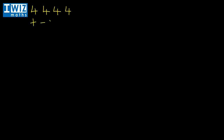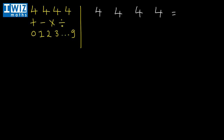Let's recall the puzzle: using four fours and the operators plus, minus, multiplication, and division, you were meant to arrive at zero through nine. We've already got zero and one, so now we need to get to two. Two can be constructed from one plus one. If you do four divided by four, which is one, and add four divided by four, you get one plus one, which equals two.